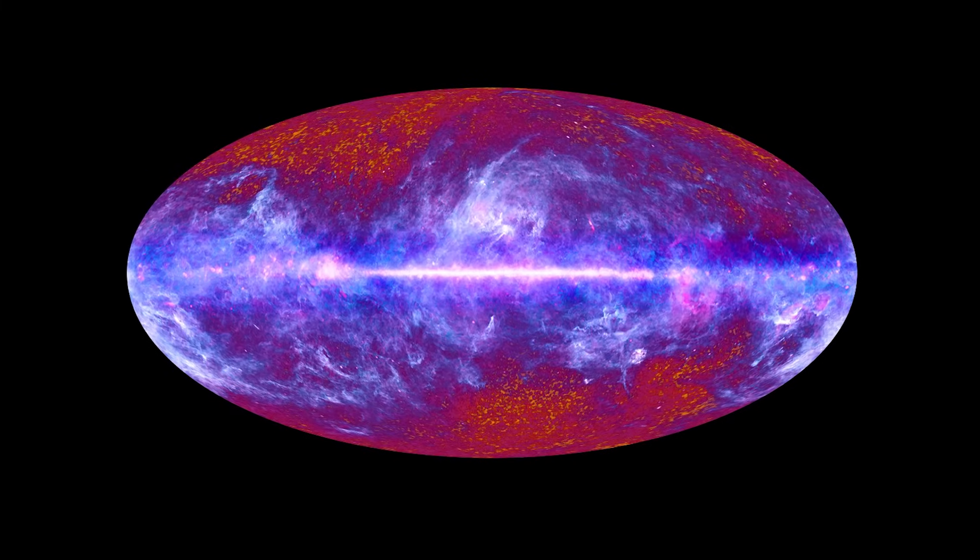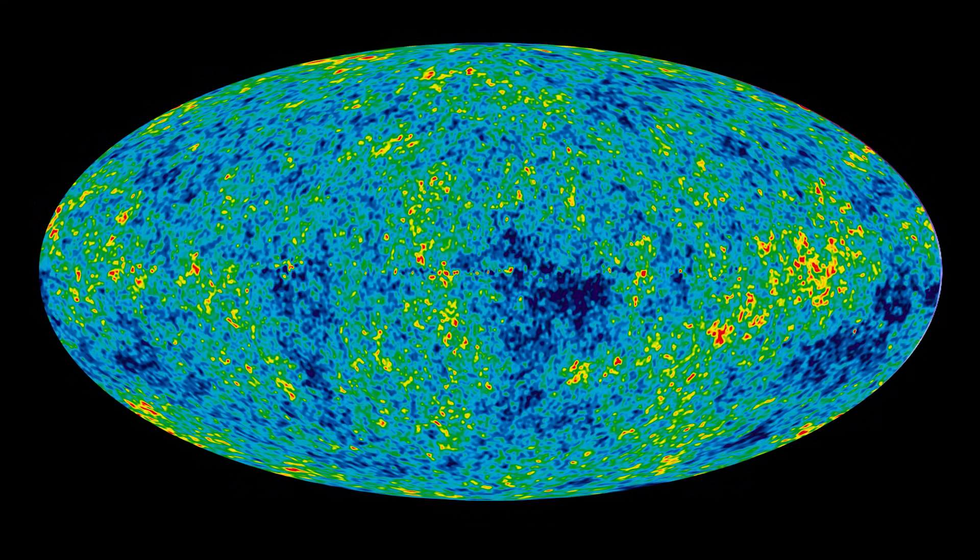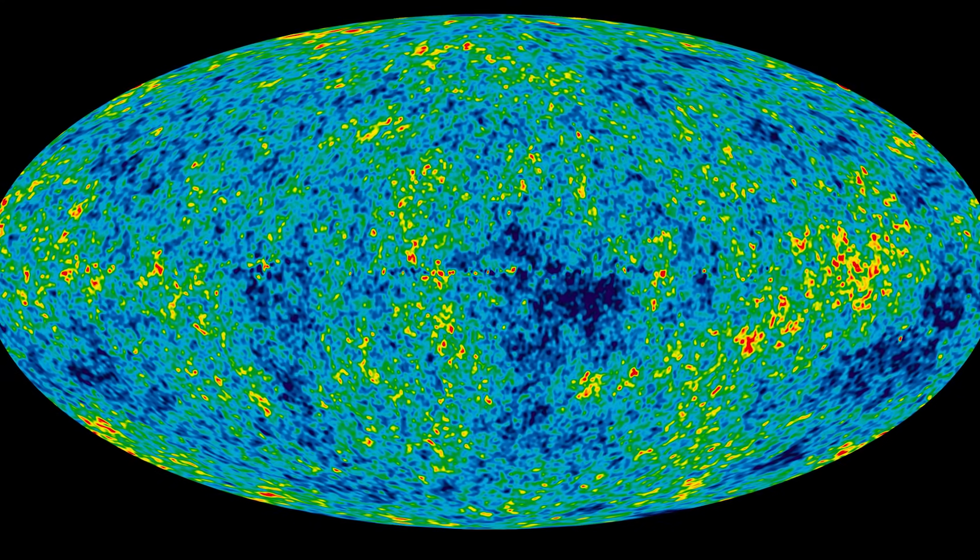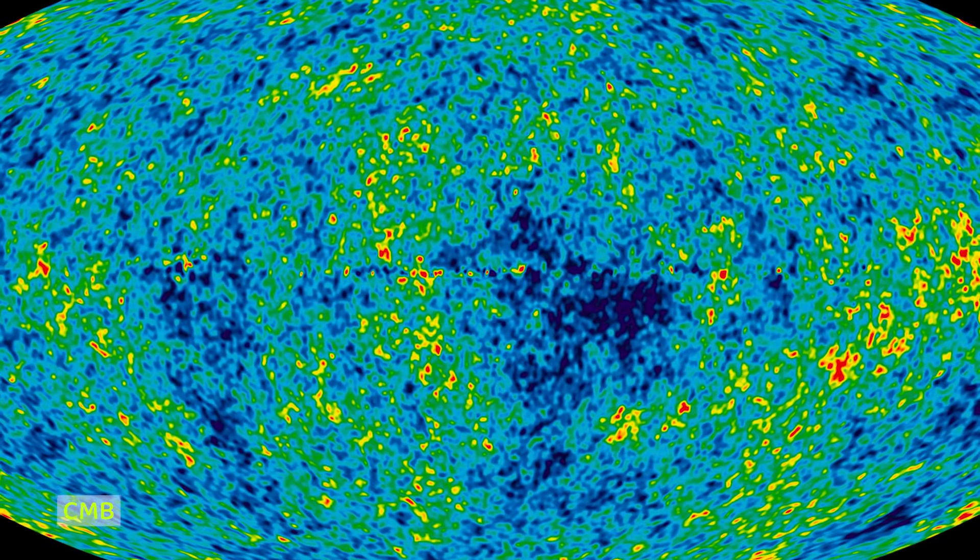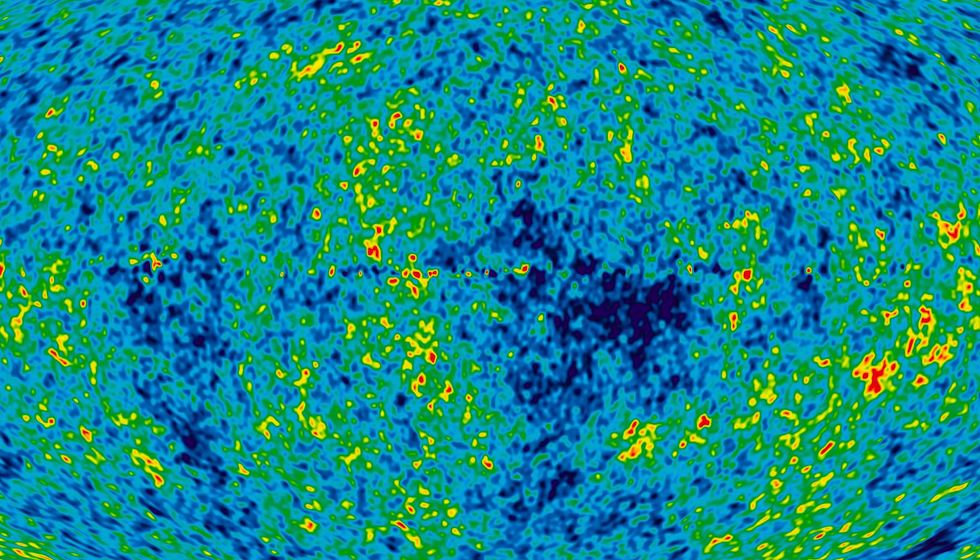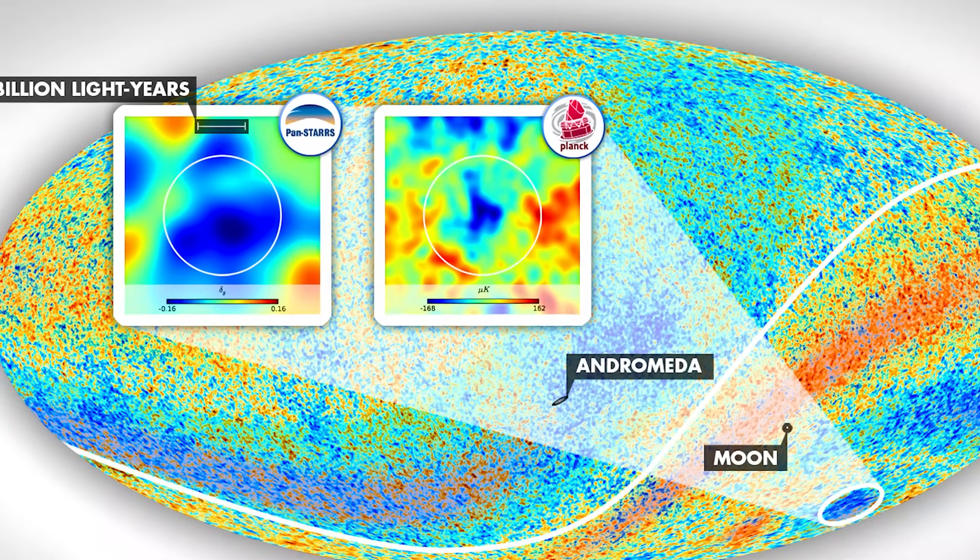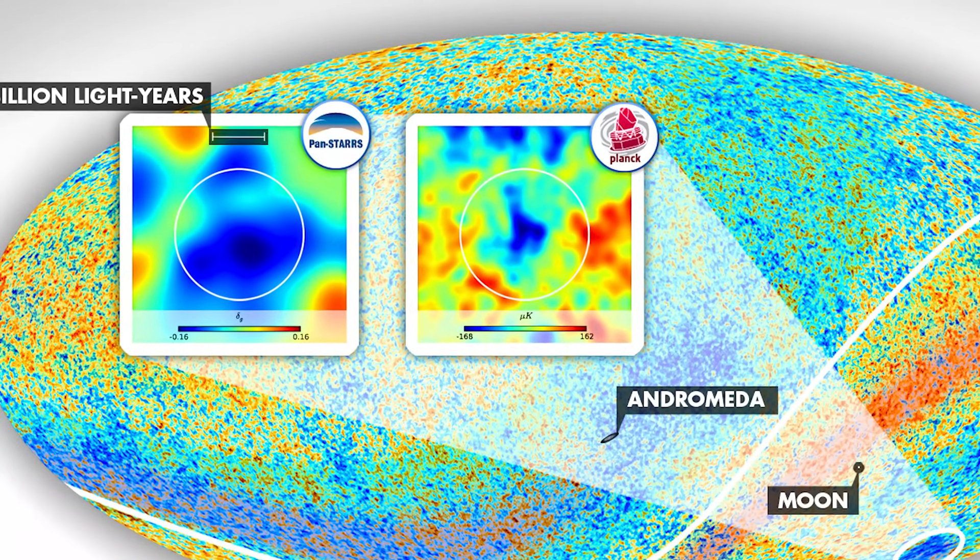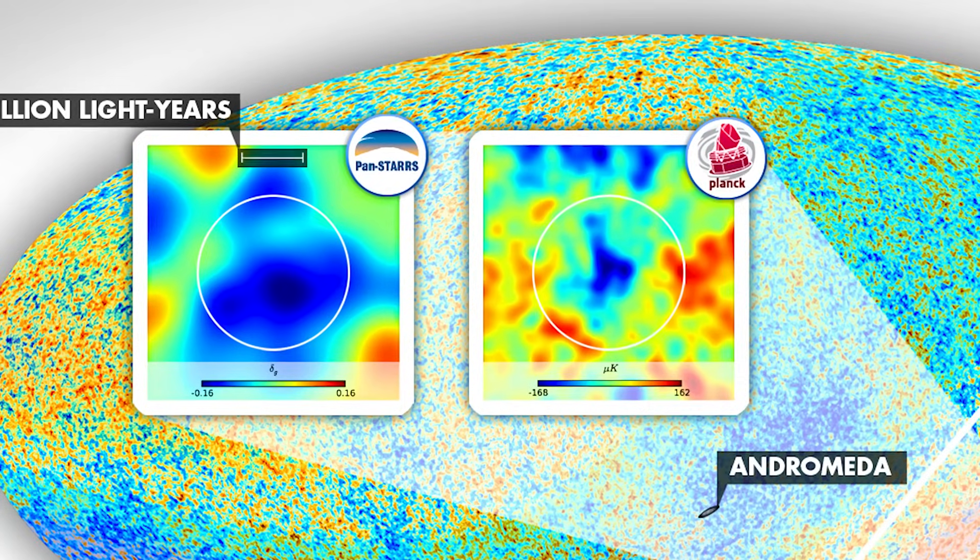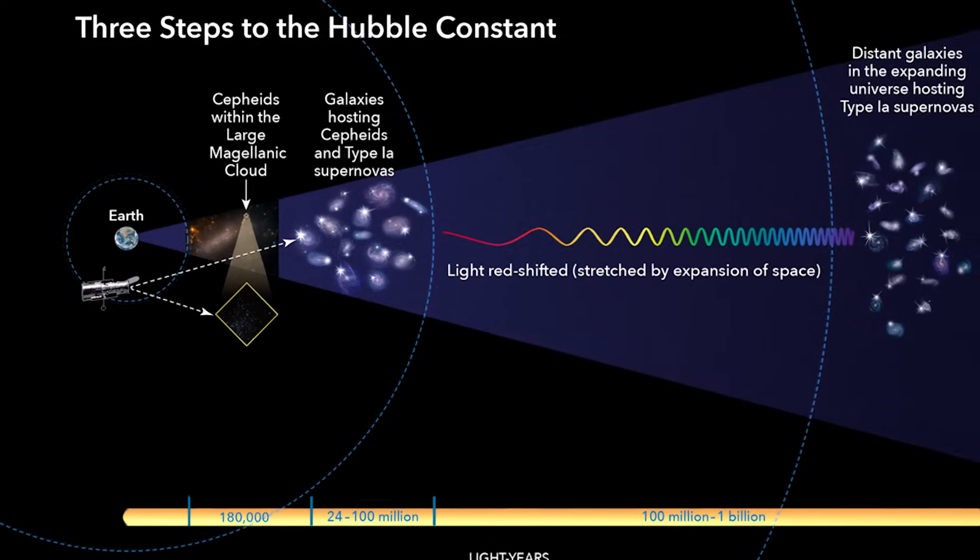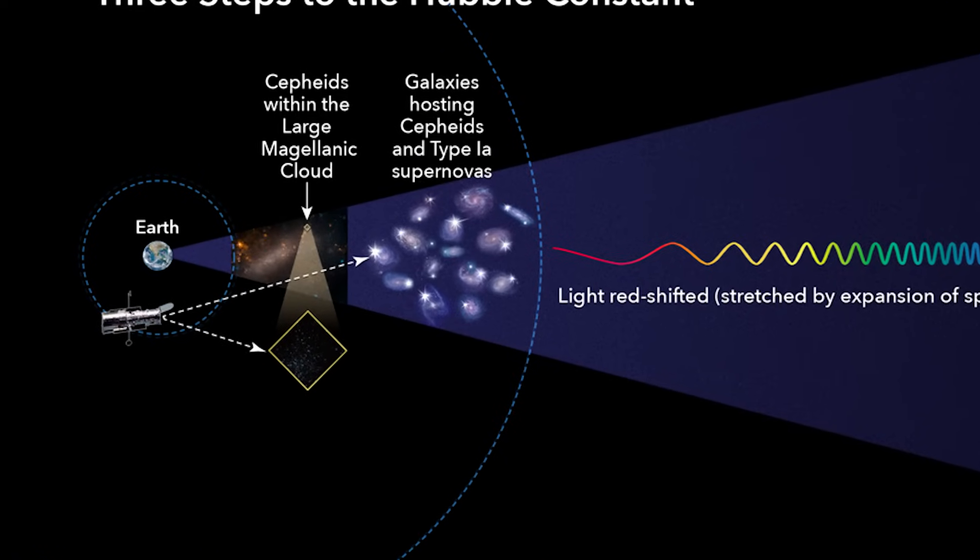Scientists have been exploring different avenues to measure the Hubble constant, one of which involves studying the cosmic microwave background, CMB. The CMB isn't just a backdrop of fading light. It also has a temperature that decreases as the universe expands. Over a ten-year period, scientists have observed a roughly 2 Kelvin decrease in the CMB temperature, directly linked to universal expansion. By examining this cooling rate, scientists can deduce the value of the Hubble constant.